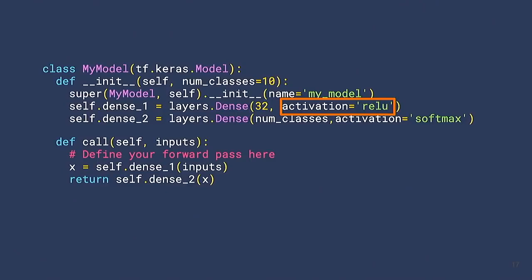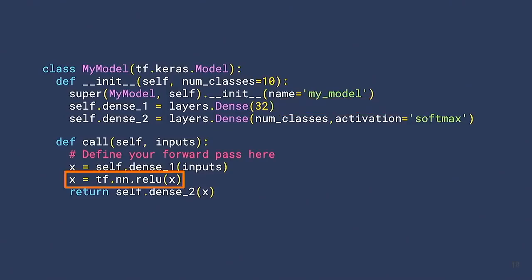In the call method, you have some inputs, feed them through your dense layer, feed the result through your second dense layer, and return it. What's nice is this is not symbolic — if you're curious what x is, you can just print x like you would in Python, and that gives you the activations of that first dense layer. If for some reason you don't want to use the built-in ReLU activation, you can just remove that and write your own with regular Python flow control. This is great for hacking on things and for really understanding what's flowing in and out of layers.